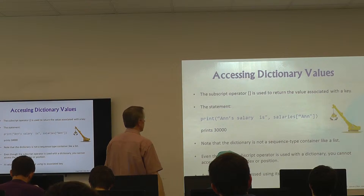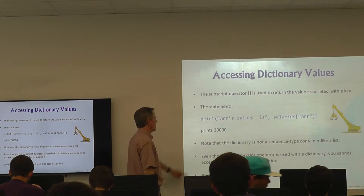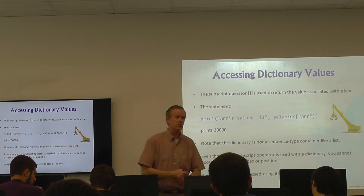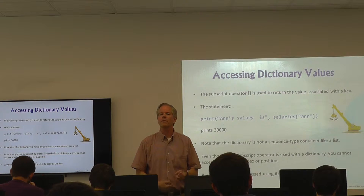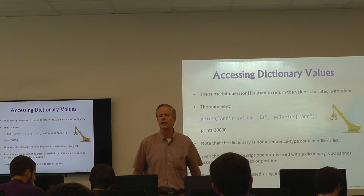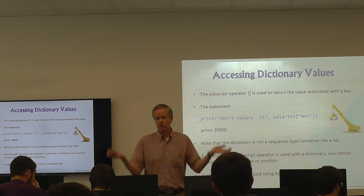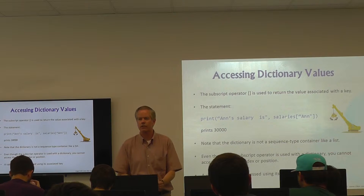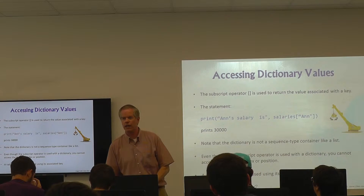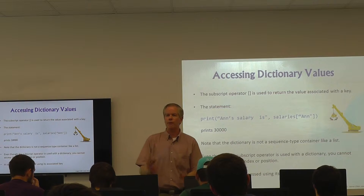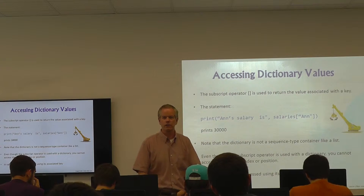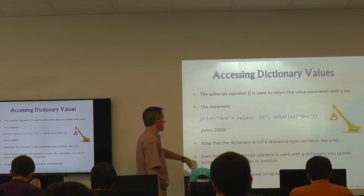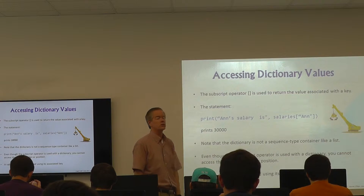Dictionaries are not a sequential type like lists. If I put something in first, second, and third into a set, how are they organized? You don't know — it's like beer cans in a bag in the back of a pickup truck on a bouncy road. You can say there's a beer can in the bag, but you can't say which one's on top or bottom. Similarly, even though the subscript operator works on a dictionary, you cannot access items by index or position — only by their associated key.